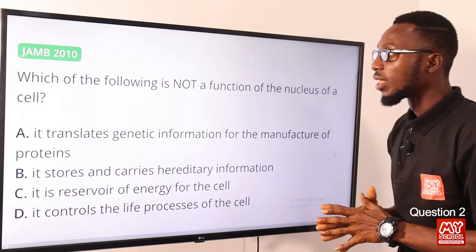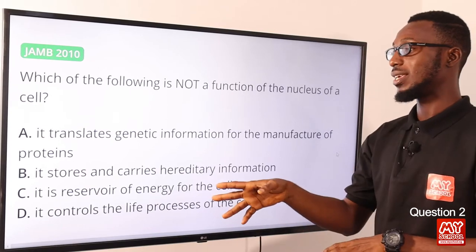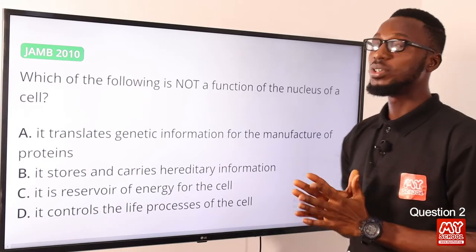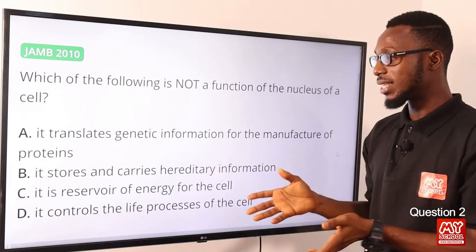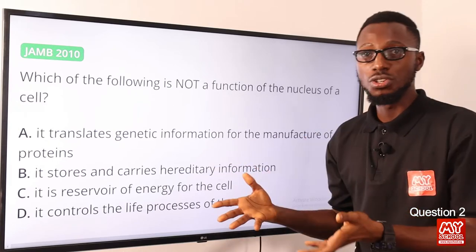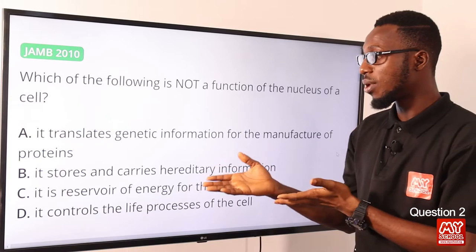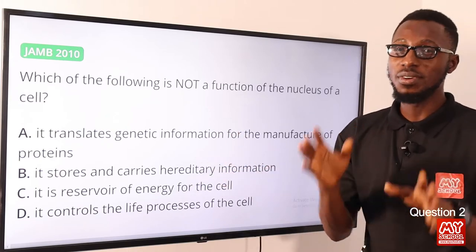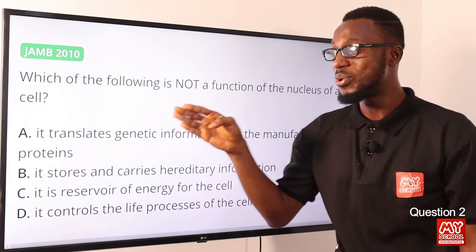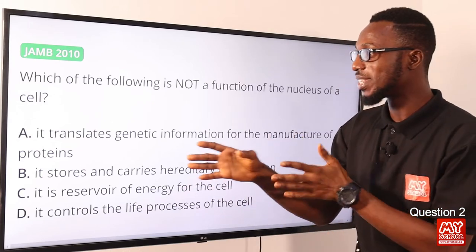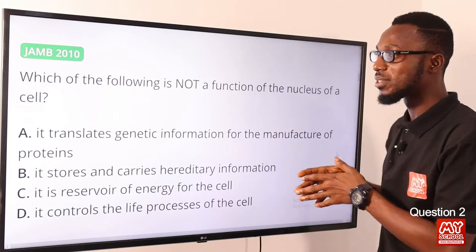Question 2: Which of the following is not a function of the nucleus of a cell? The correct option is option C — 'a reservoir of energy for the cell.' We know that the mitochondria is responsible for energy, where the process of respiration takes place and energy is released. We refer to the mitochondria as the powerhouse of the cell. So option C is correct because it is not one of the functions of the nucleus.